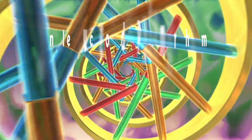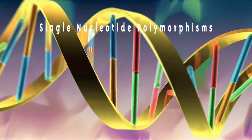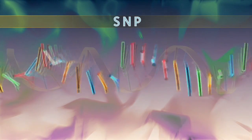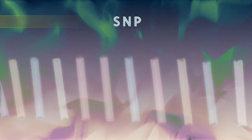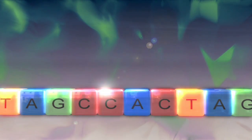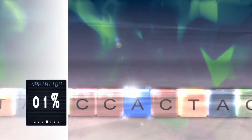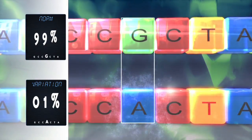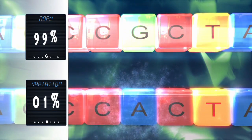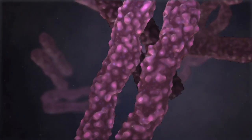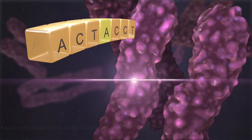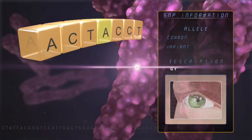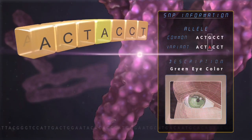Single nucleotide polymorphisms, also called SNPs or SNPs, are variations in a DNA sequence that occur when a single nucleotide in the sequence is different from the norm in at least 1% of the population. When SNPs occur inside a gene, they create different variants or alleles of that gene.